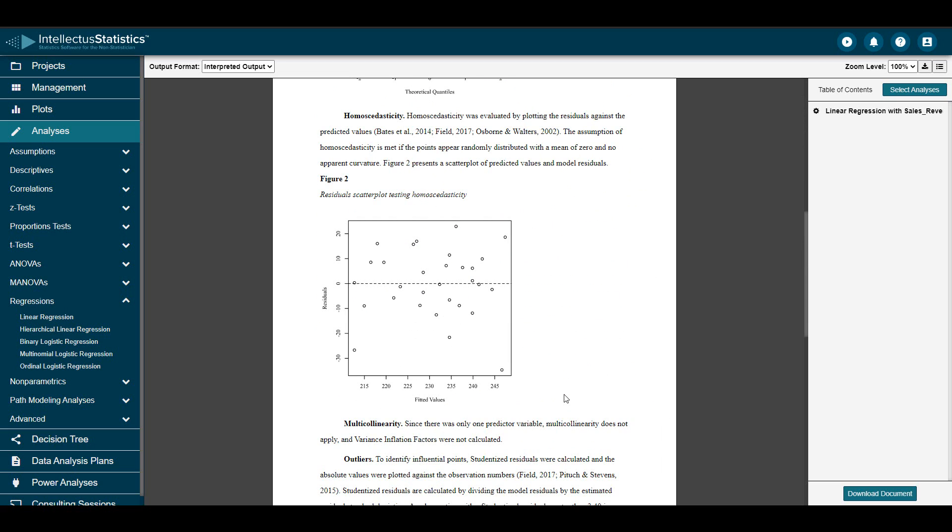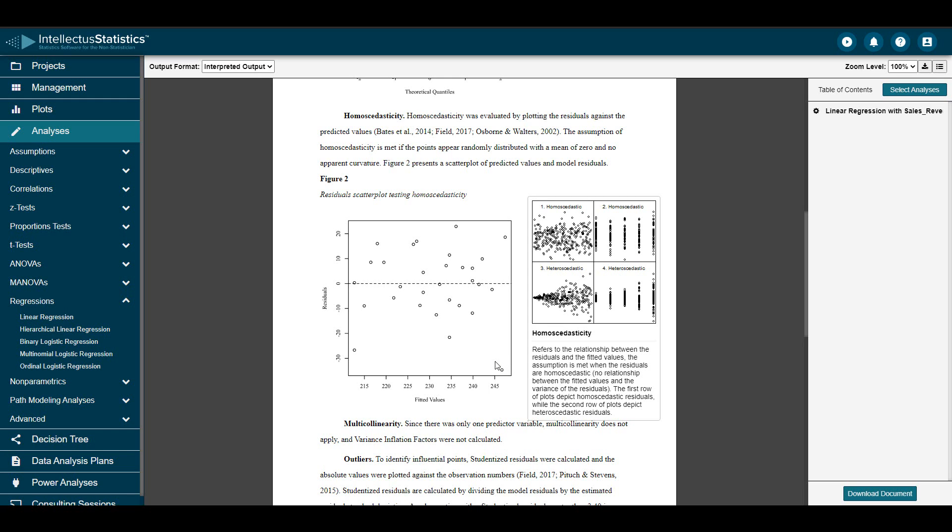The next assumption to evaluate is homoscedasticity. This is examined with a residual scatter plot. We are verifying that the points appear randomly scattered. This is the case, so we can say the homoscedasticity assumption appears to be met as well. Just like with a normality plot, hovering over the plot reveals a tooltip with examples of both homoscedastic and heteroscedastic data.